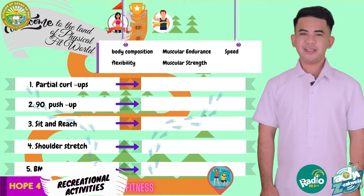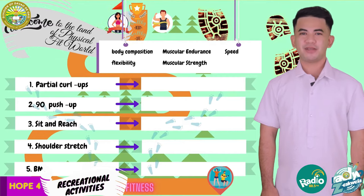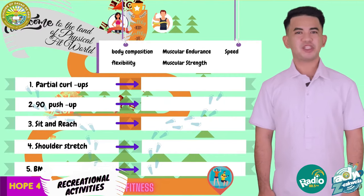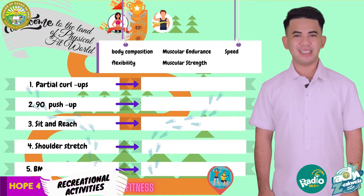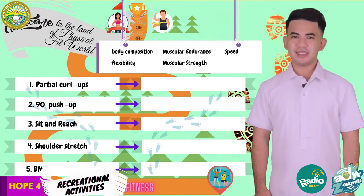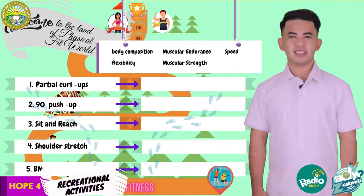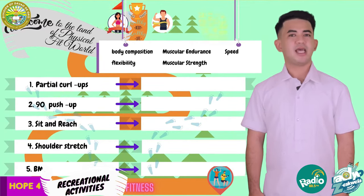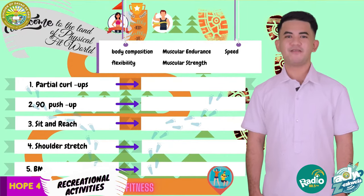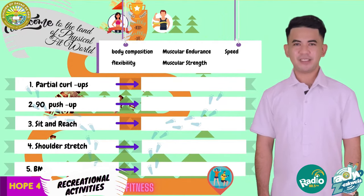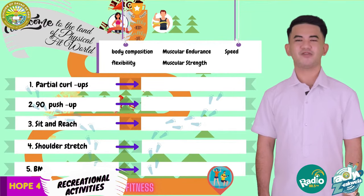Get your pen and your notebook. Imagine you are on a trek as part of your recreational activity. The left steps indicate the following tests, while the right steps indicate the health-related fitness components. I will give you 30 seconds.